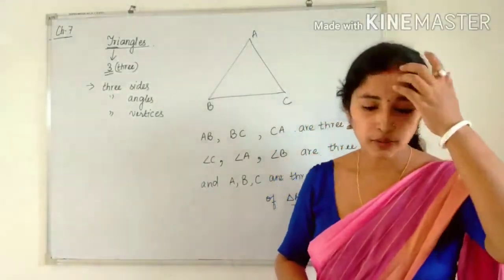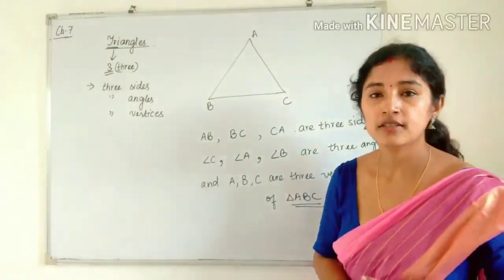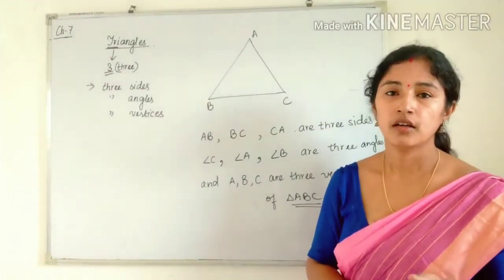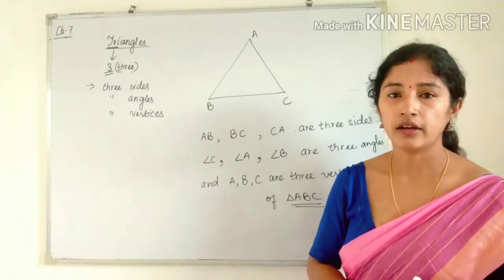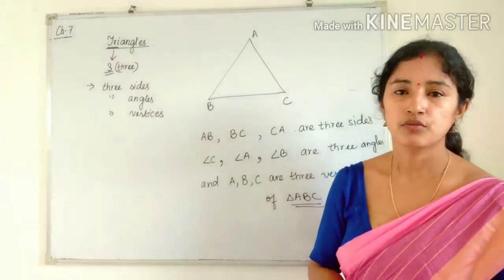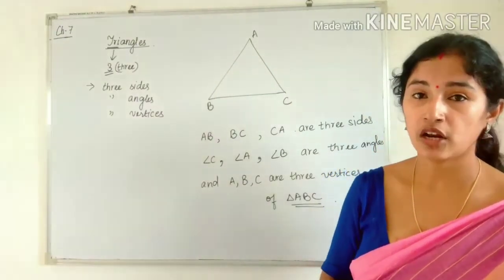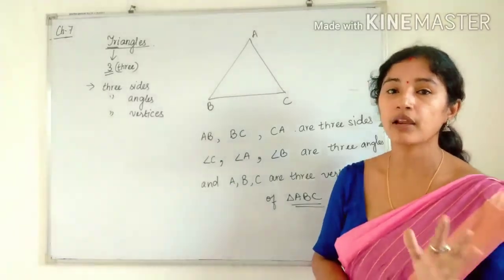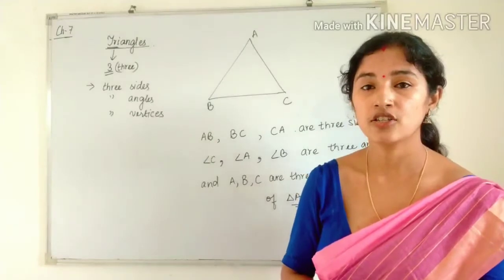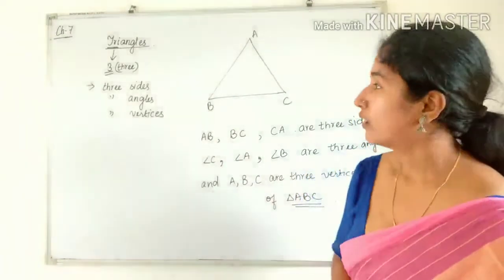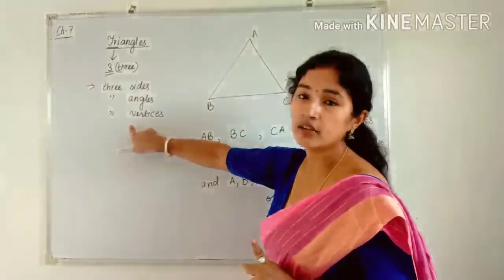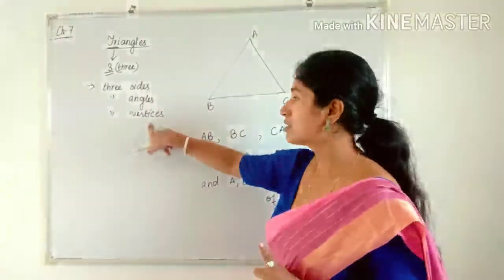Hello, students of Class 9. Today I'm going to start the new chapter, that is Chapter 7: Triangles. We have already studied triangles, so first I'm giving you the basic terms we use. 'Tri' means three, so in a triangle we have three sides, three angles, and three vertices. 'Vertices' is the plural form of 'vertex'.